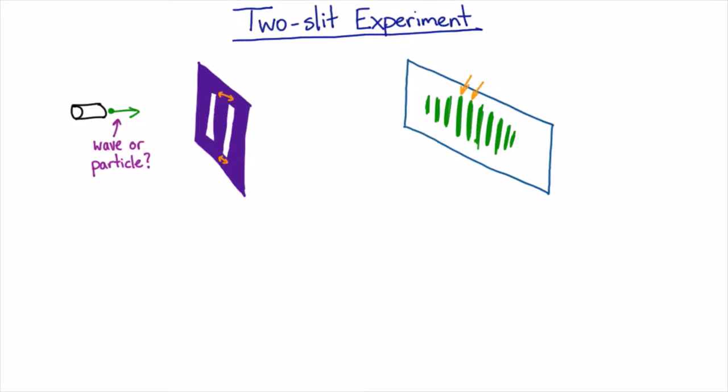The other main thing he showed was that light was clearly a wave, because you can't possibly get interference fringes if you don't have a wave. You can't get two particles adding together to give you nothing, or two particles adding together to give you the equivalent of four particles.